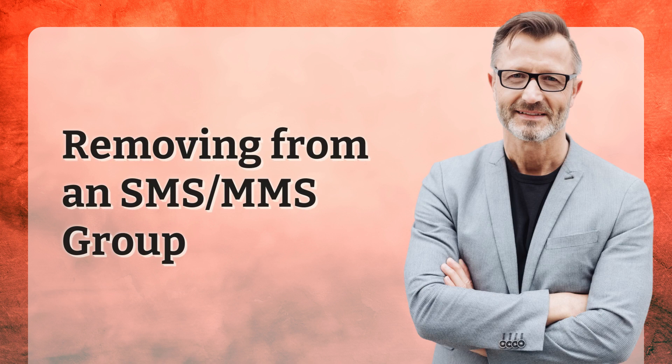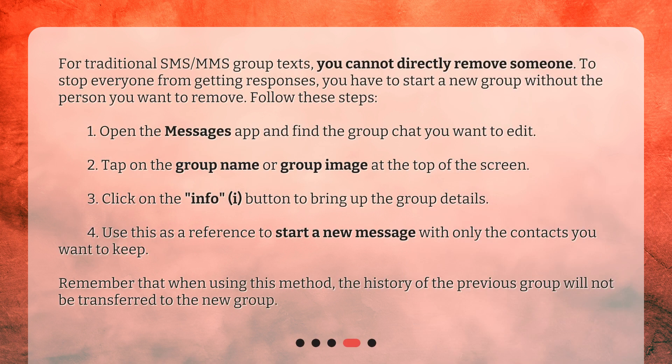For traditional SMS/MMS group texts, you cannot directly remove someone. To stop everyone from getting responses, you have to start a new group without the person you want to remove. Follow these steps: 1. Open the Messages app and find the group chat you want to edit. 2. Tap on the group name or group image at the top of the screen. 3. Click on the Info button to bring up the group details. Use this as a reference to start a new message with only the contacts you want to keep. Remember that the history of the previous group will not be transferred to the new group.